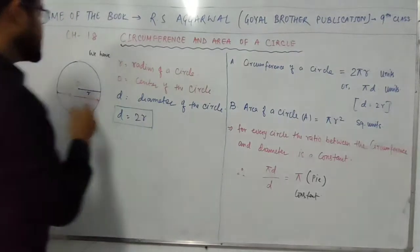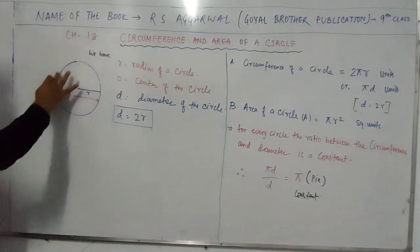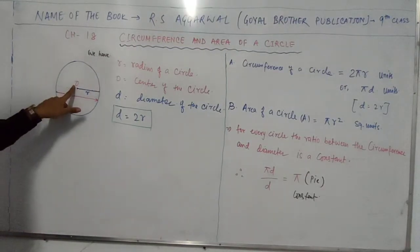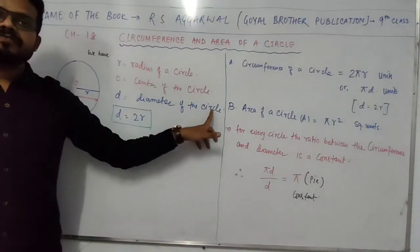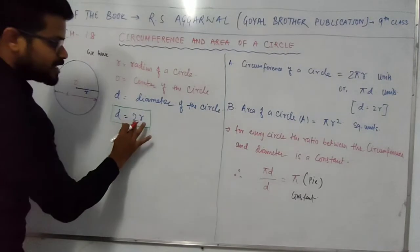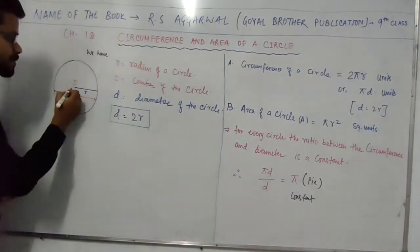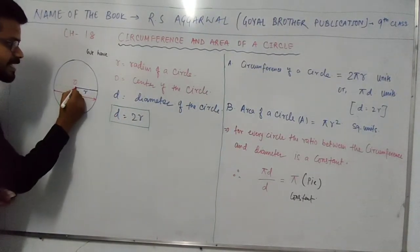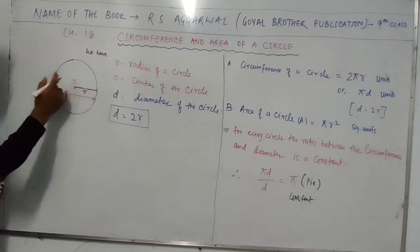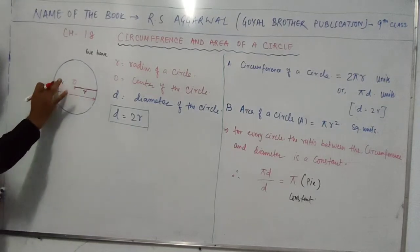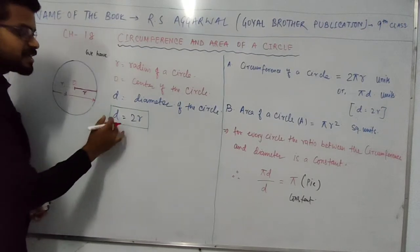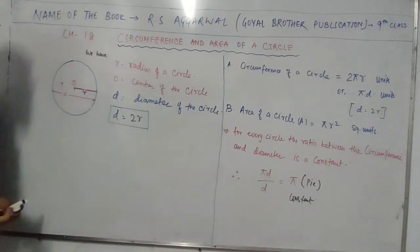First of all, this is the circle and the radius of the circle is r, small r. O is the center here and D is the diameter of the circle. Diameter is basically twice the radius, 2 times r. Because from the center, one half of the distance is radius, and the other half is also a radius. So r plus r is 2r, and this 2r is basically the diameter. So small d is the diameter of a circle.